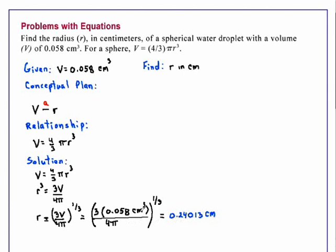We only have one experimental datum, and that is the 0.058, which has two significant figures. And therefore, we must round our answer to two significant digits. And our final answer, then, is 0.24 centimeters.